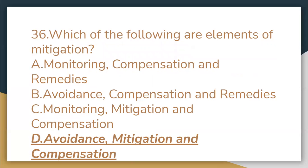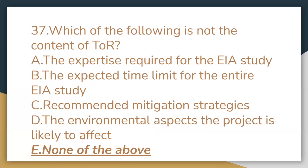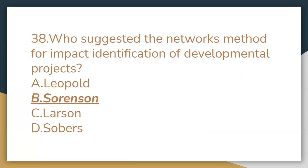Which of the following are elements of mitigation? Avoidance, mitigation, and compensation. Which of the following is not the content of TOR? None of the above. Who suggested the network method for impact identification of a developmental project? Sorensen.